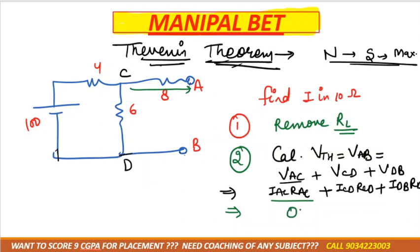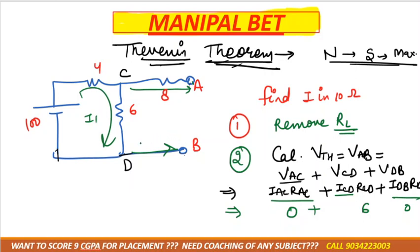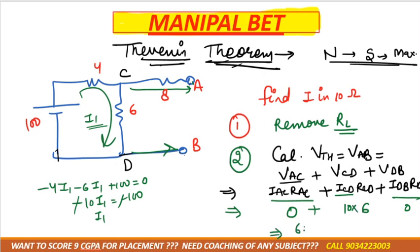IAC is zero because no current flows in that branch, and IDB is also zero. RCD is 6 ohm; ICD is calculated using mesh analysis. The mesh equation: minus 4I1 minus 6I1 plus 100 equals zero, giving minus 10I1 equals minus 100, so I1 equals 10. VTH = ICD × 6 = 60 volts. Half of the Thevenin calculation is now complete.